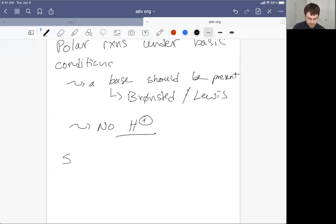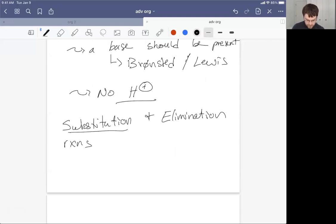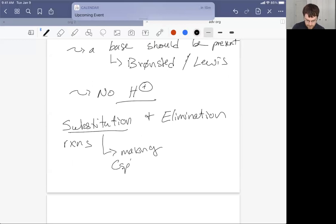Key examples of polar reactions under basic conditions are substitution and elimination reactions. These are great reactions because substitution reactions allow for bonds to be made with C sp3 carbons, whereas elimination reactions allow for the formation of alkenes. And these alkenes can come from SP3 hybridized carbon atoms.